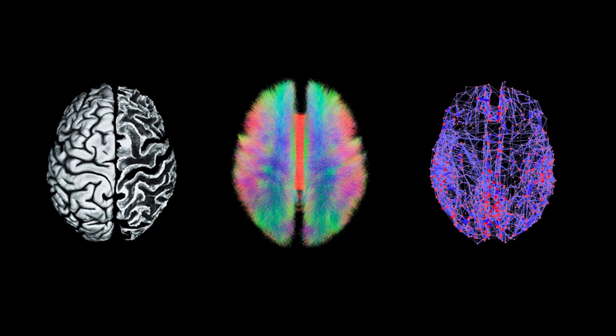What used to be done with painstaking manual dissection of postmortem brains can now be done in living human beings. Using a technique called diffusion-weighted magnetic resonance imaging, we can actually trace out the fibers that interconnect different parts of the brain to each other, and we can assemble circuit diagrams of individual brains, which we call connectomes.